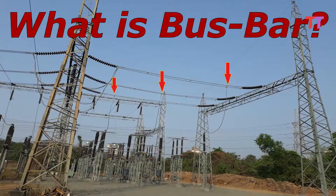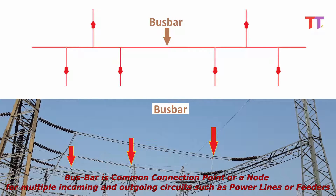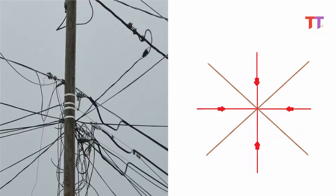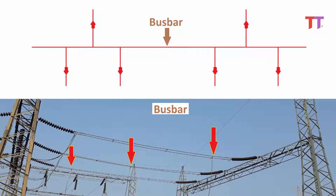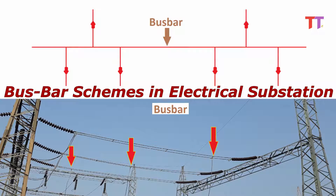First, what is a bus bar? In simple words, a bus bar is a common connection point or node for multiple incoming and outgoing circuits such as power lines or feeders. As we know, it is impractical to connect multiple conductors at one point, hence we use bus bars where these connections can be done spaciously and conveniently. Let's start with different bus bar schemes or systems in electrical substation.